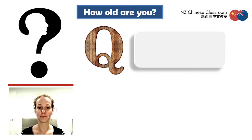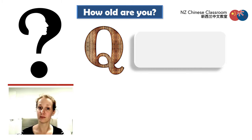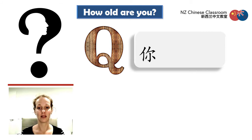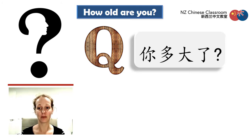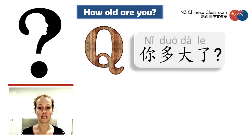Asking how old you are. First, we need to say the word 'you.' How old are you? 是什么? 你多大? 多大 means 'how big' literally — 'How big are you?' And we add on this 了, which shows that this is something that changes; it's something that was different from last year. 你多大了?